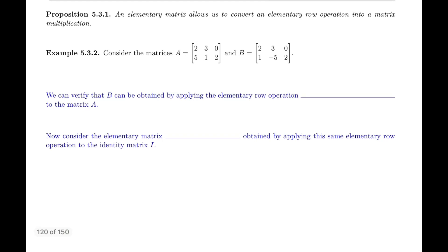This brings us to Proposition 5.3.1, which says that an elementary matrix allows us to convert an elementary row operation into a matrix multiplication. As an example, consider two matrices A and B — if you look at B, you can obtain it from A with one elementary row operation, specifically row two minus two times row one, which becomes the new row two. That operation turns A into B.